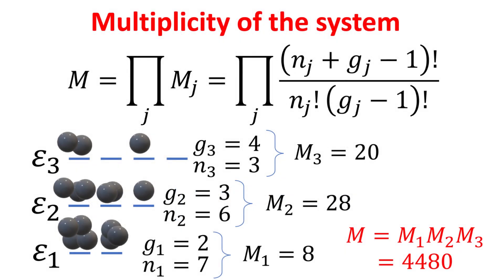The multiplicity of the system is then the product of the multiplicities for all the energy levels. Let's end this with a simple example of a three energy level system. The degeneracies g1 is 2, g2 is 3, and g3 is 4. The number of bosons are n1 equals 7, n2 equals 6, and n3 equals 3. With these, we can work out the multiplicities for each energy level, and the total multiplicity for the system is 4480.